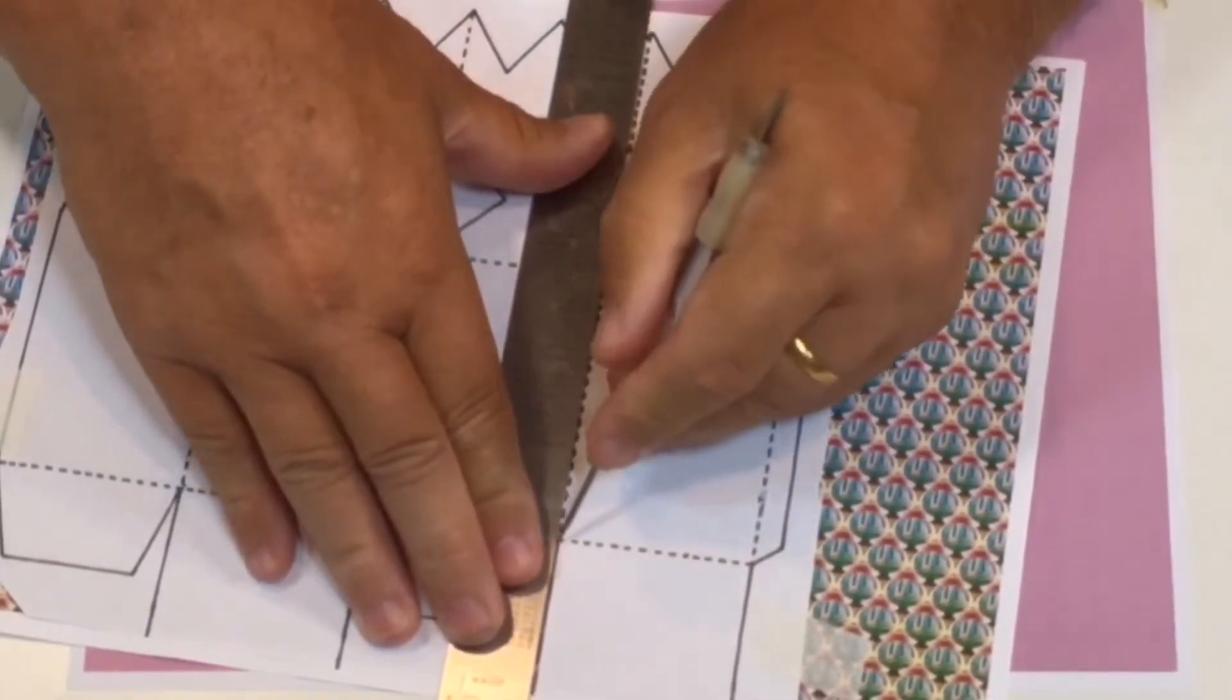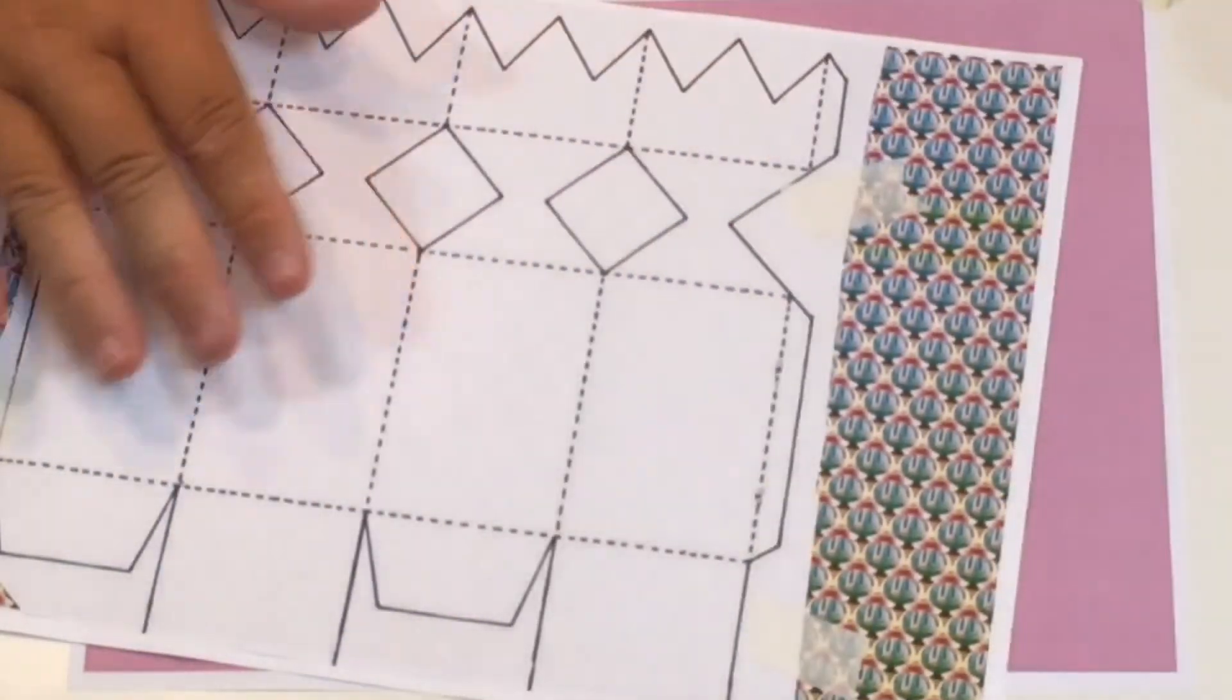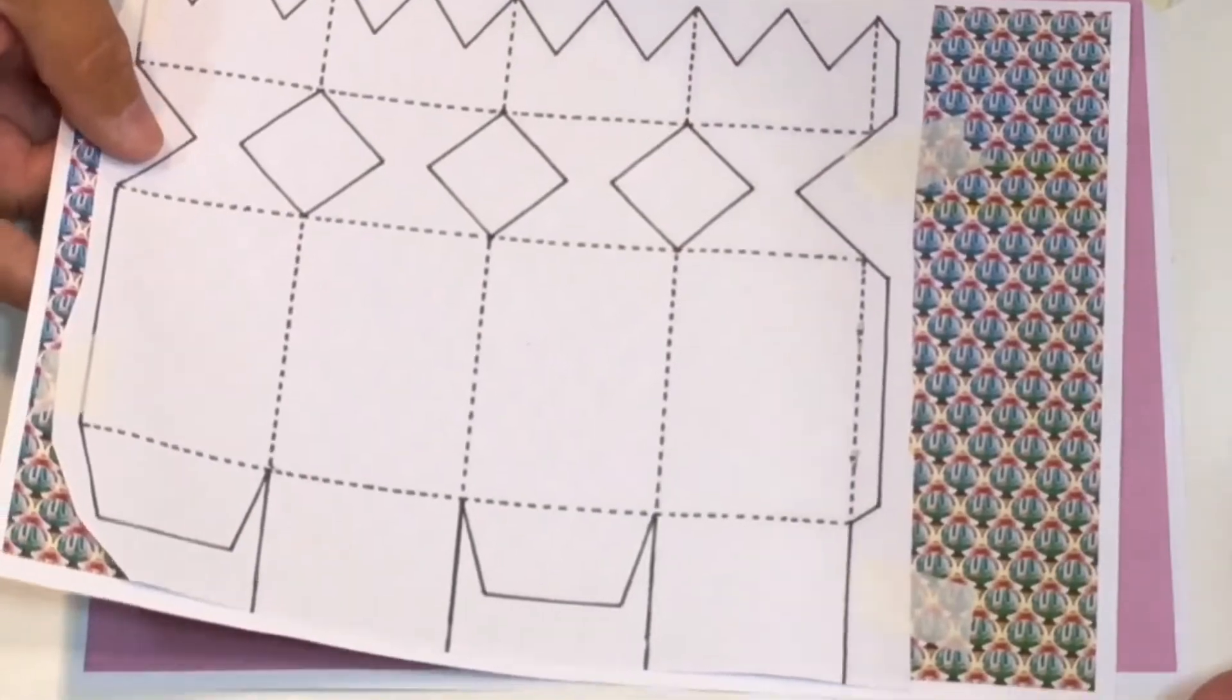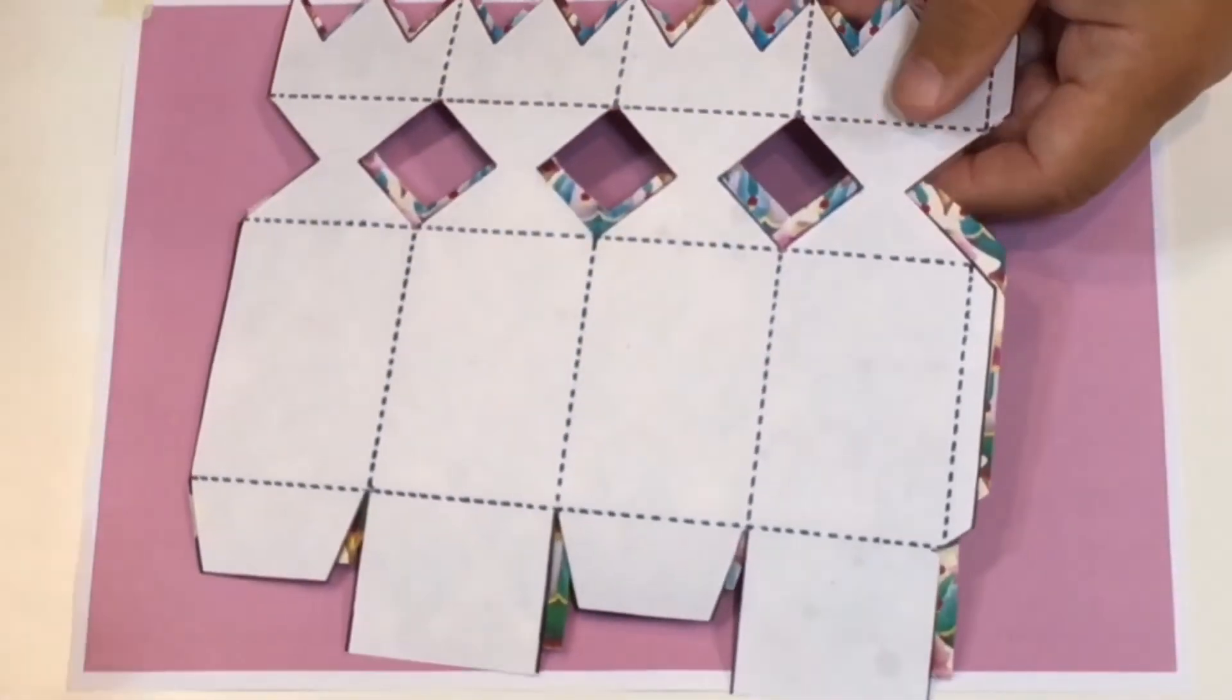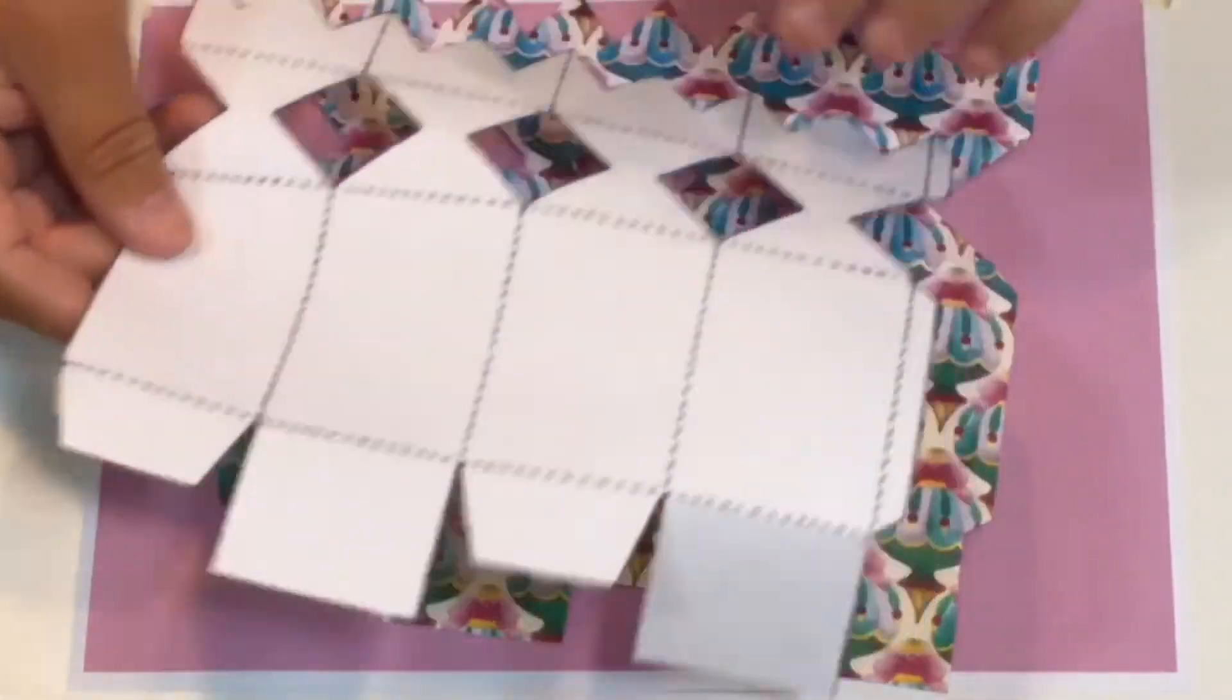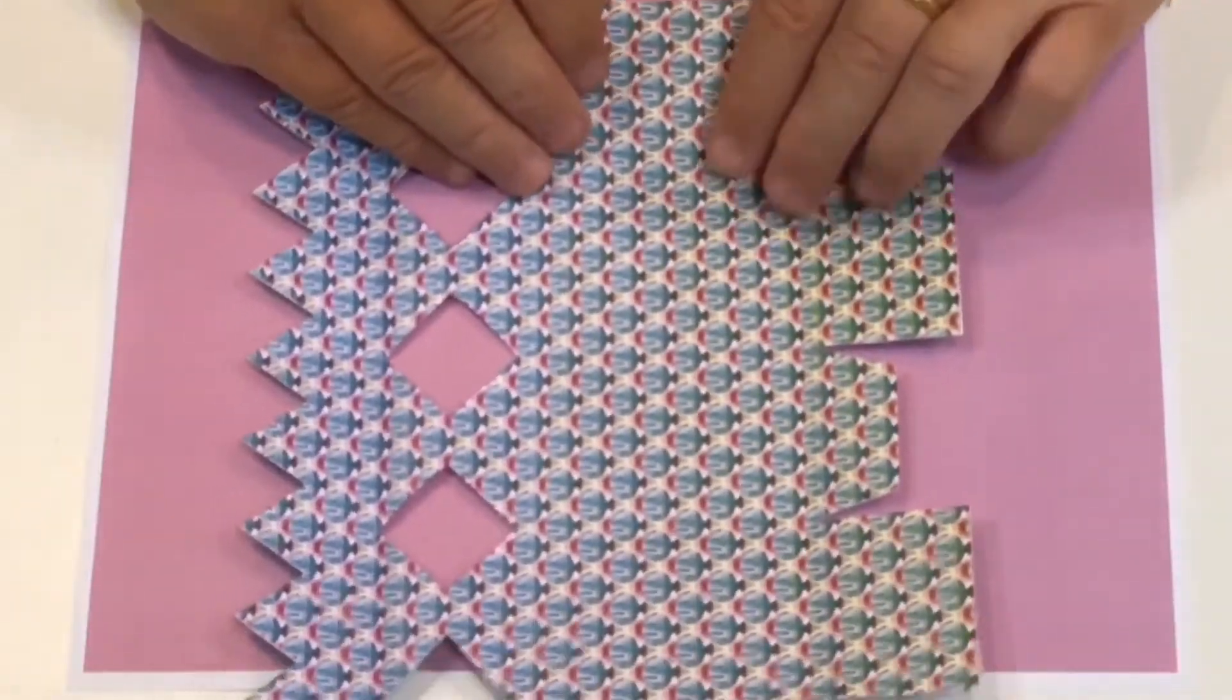Just score down there and that'll put an indentation in the paper and card underneath which will help you fold exactly in the right place. So do all that and then cut it out with a pair of scissors. So when you've cut it out, you end up with it looking like that.